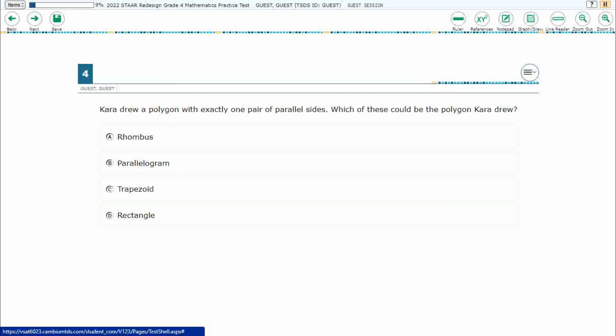We're using item number four of the redesigned STAAR practice test. If you haven't done so already, please pause the video, work this problem out on your own, then unpause it and we'll look at our answers together. Kara drew a polygon with exactly one pair of parallel sides. Which of these could be the polygon that Kara drew?